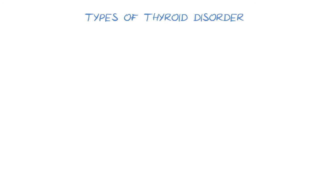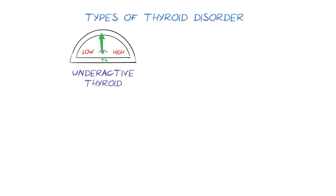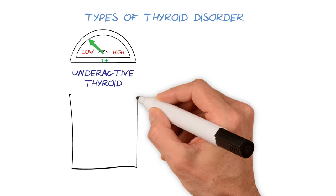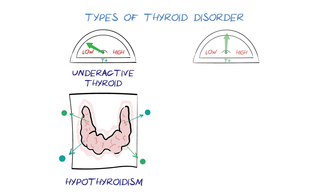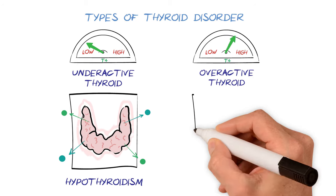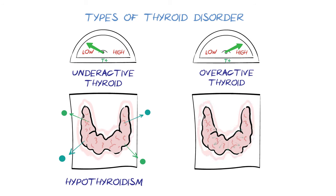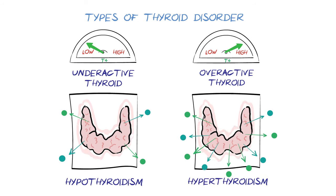However, in some people, the thyroid gland doesn't work properly. An underactive thyroid gland can lead to too little thyroid hormone being made, which is called hypothyroidism, because hypo means too little. Others can have an overactive thyroid gland where the thyroid hormone levels are too high, which is called hyperthyroidism, because hyper means too much. These are the two main types of thyroid disorder.